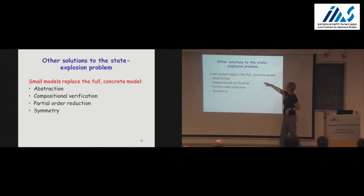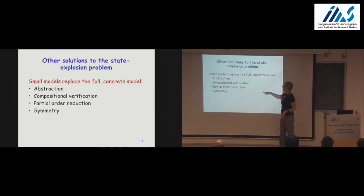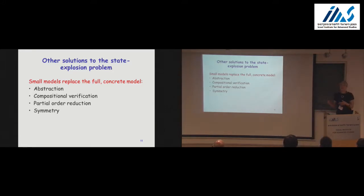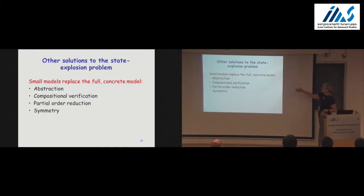Another option is to look at the system and say it is composed of many components and exploit this. Another direction is partial order reduction, very popular for explicit non-symbolic model checking, where we identify computations that are redundant and build a model consisting only of representatives. There is also symmetry, and many others. The idea is that we take the full model and replace it by a smaller one.